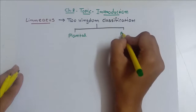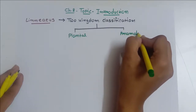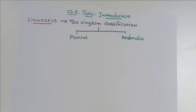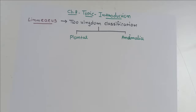So the two kingdoms are the same: Plantae and Animalia. Linnaeus further classified using not only morphological characters but some other characters as well. We see that Aristotle first classified into two kingdoms — plant and animals — and plant kingdom was further classified on the basis of morphological structure. But Linnaeus used additional characters beyond morphology.